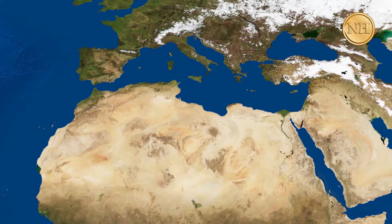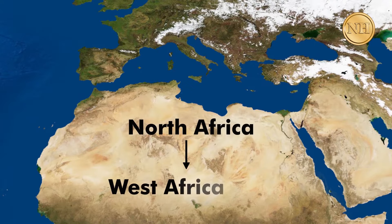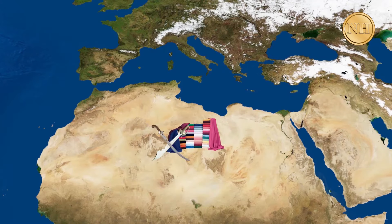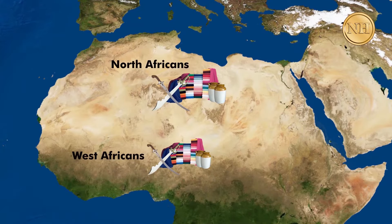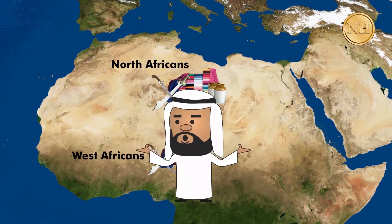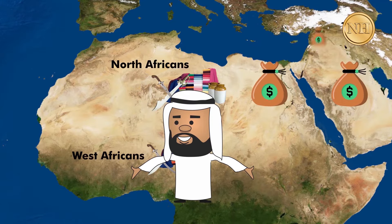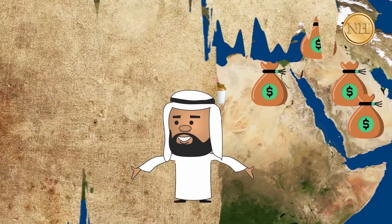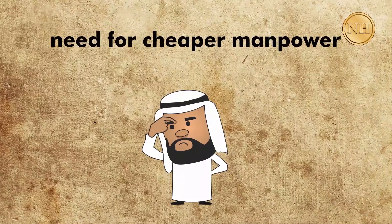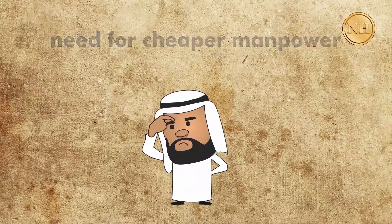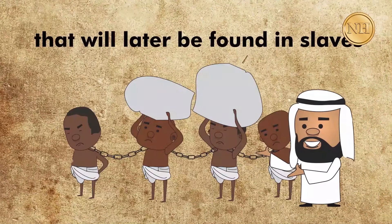The Arab merchants conducted their business between North African states in the West. In return, they brought in weapons, fabrics, and other precious items to sell to the North Africans, even down towards West Africa. The lucrative business meant prosperity for everyone, which led to the need for cheaper manpower that would later be found in slaves.